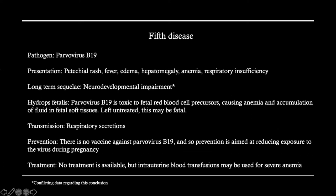Fifth disease, also known as parvovirus, is transmitted via parvovirus B19. It presents with a very distinct petechial rash, and anemia is very commonly present. There are concerns for neurodevelopmental delays, though the data is conflicting — studies from the Netherlands and Germany disputed whether neurodevelopmental delays are present long-term post exposure. Very commonly, parvovirus causes anemia through toxicity to fetal red blood cell precursors, leading to fluid accumulation in soft tissues, which may be fatal if untreated. Intrauterine blood transfusions may address the severe anemia. There is no vaccine, so prevention focuses on reducing exposure during pregnancy.